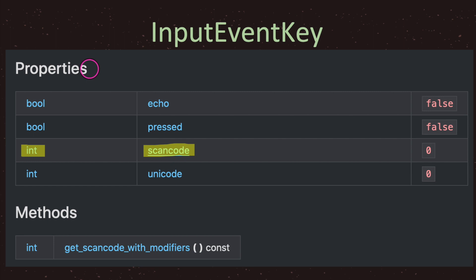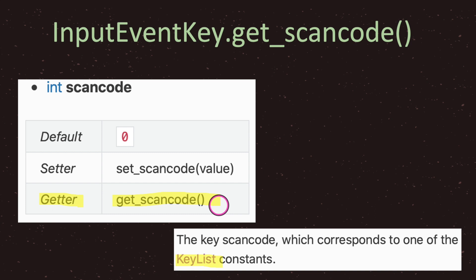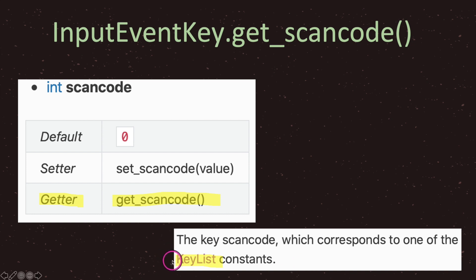On the InputEventKey API page you'll see properties and methods. We can ignore methods and most properties — we just want to know when a user has pressed a specific key. If you want to react to a user pressing a specific key such as the right arrow key or the letter D, we look at the property called scancode. The API shows a setter and a getter; we're interested in the getter, which tells us that to receive the scan code integer value we use the get_scan_code method. The key scan code corresponds to one of the KeyList constants — that's the most important thing in InputEventKey.